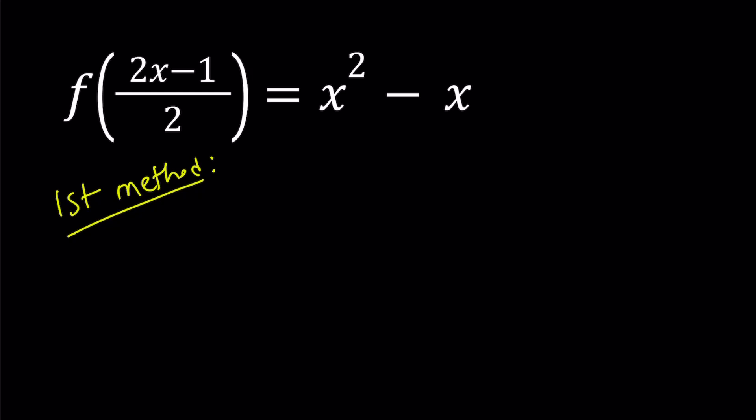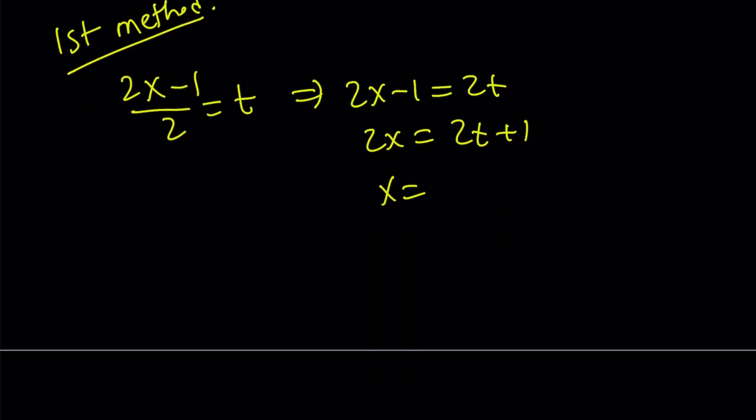For my first method, I'm going to set this expression right here to something. I'm going to set it equal to maybe t. And from here, I get the following. 2x minus 1 becomes 2t, and then 2x becomes 2t plus 1, and x becomes 2t plus 1 divided by 2.